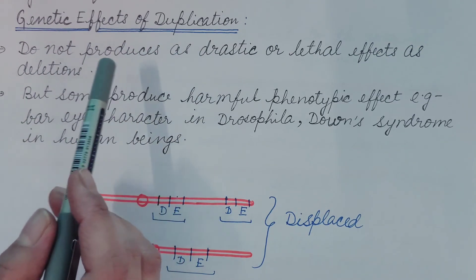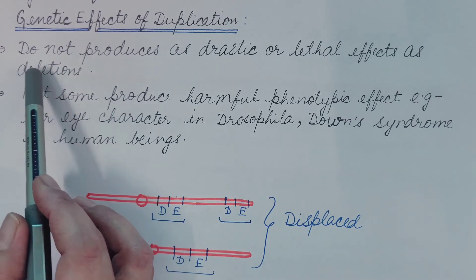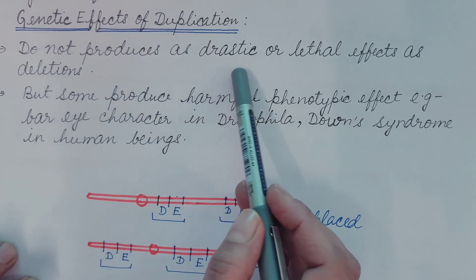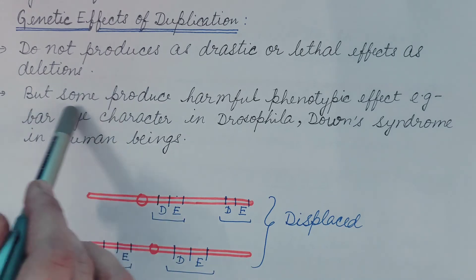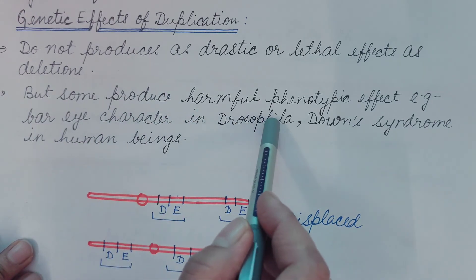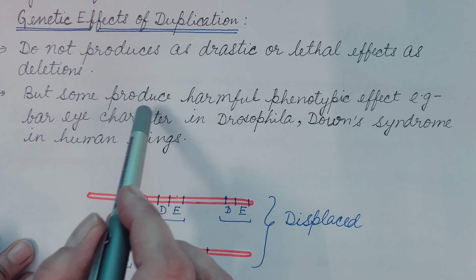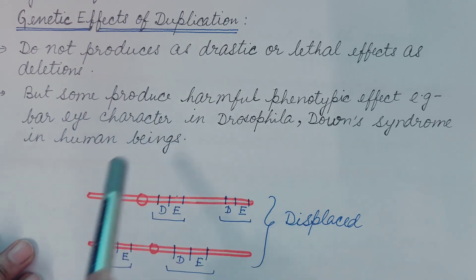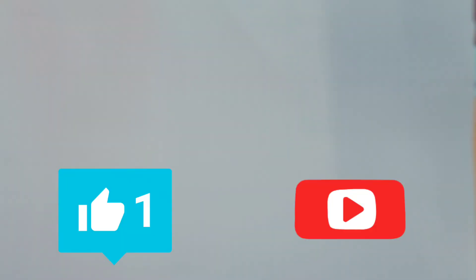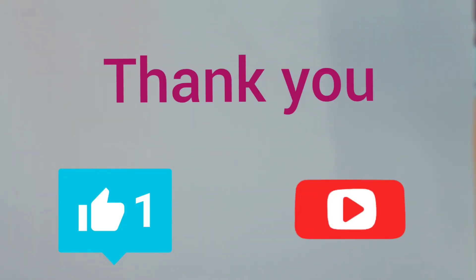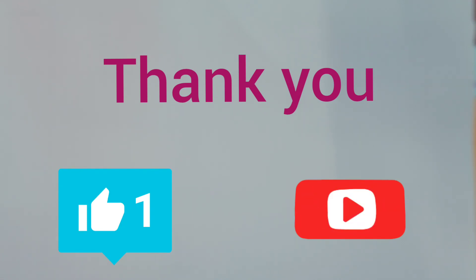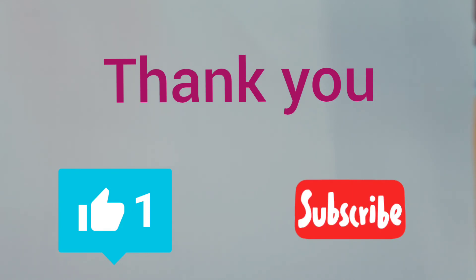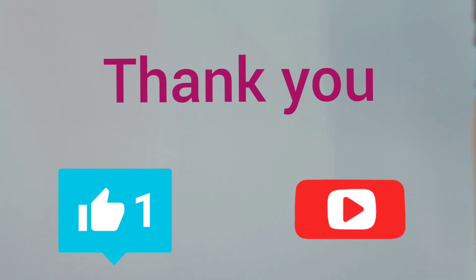Genetic effects of duplication: Duplication does not produce as drastic or lethal an effect as deletions, but sometimes it produces harmful phenotypic effects. Examples include bar eye character in Drosophila and Down syndrome in human beings. That is all for today's video. In the next video, we will discuss the third type of chromosomal aberration — inversion. If you like this video, please hit the like button, share it, and subscribe to the channel. Thank you.